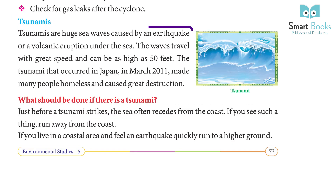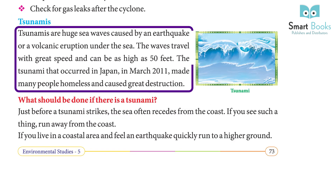Tsunamis: Tsunamis are huge sea waves caused by an earthquake or a volcanic eruption under the sea. The waves travel with great speed and can be as high as 50 feet. The tsunami that occurred in Japan in March 2011 made many people homeless and caused great destruction.